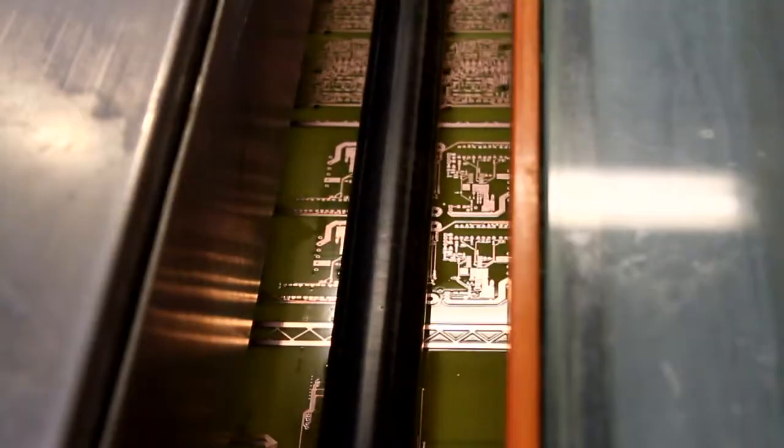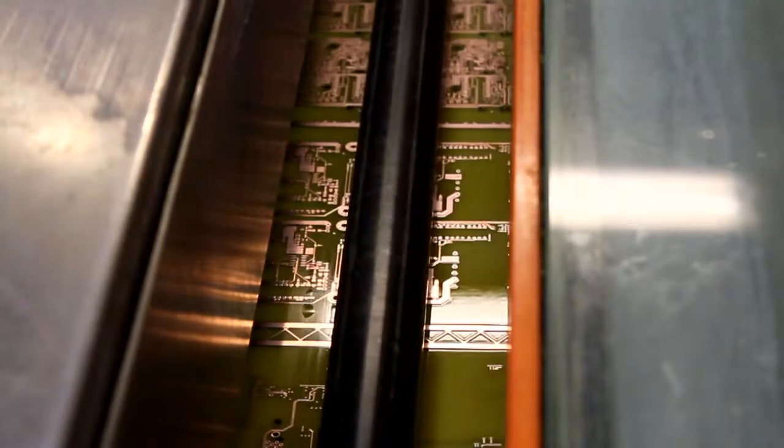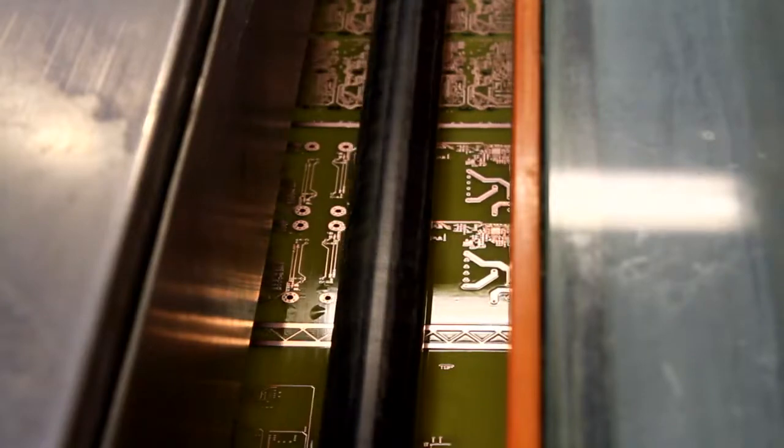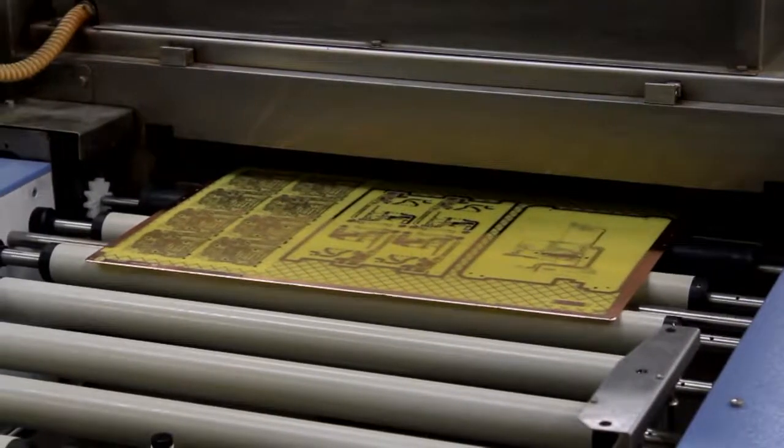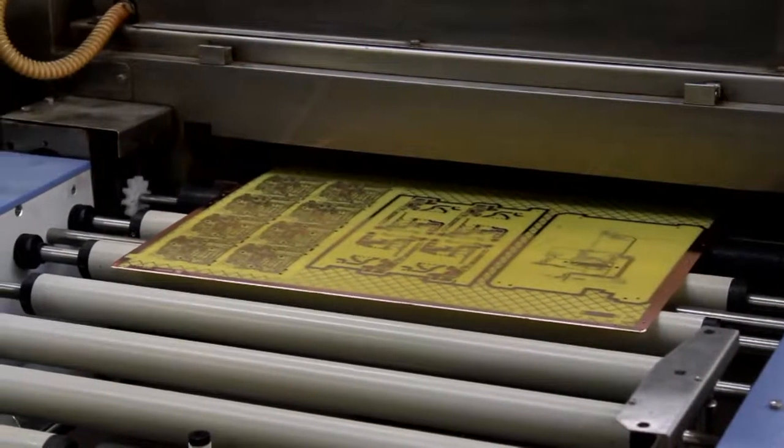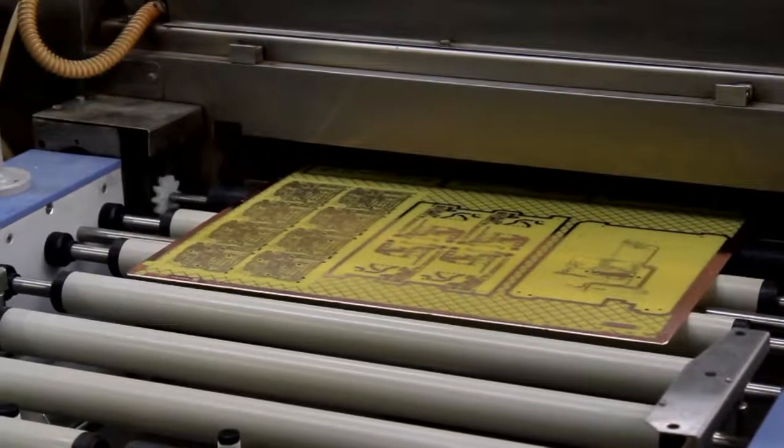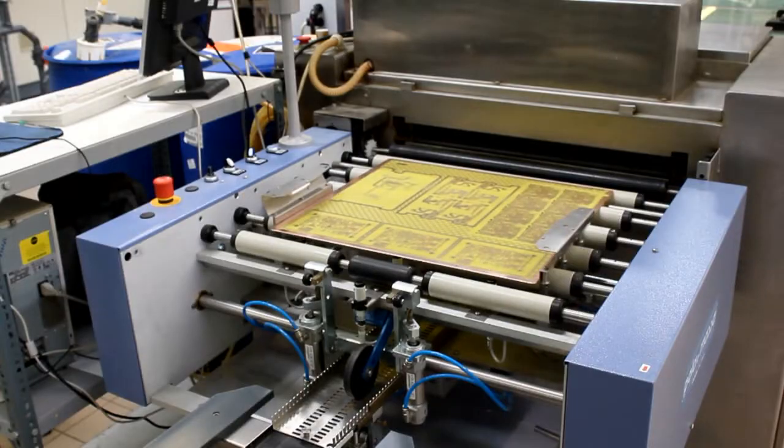Then we remove the unwanted copper using a powerful alkaline solution to etch away the exposed copper. The process is carefully controlled to ensure that as we etch down we don't etch sideways as well. This means that the finished conductor widths are exactly as designed. But designers should be aware that the thicker copper foils need wider spaces between the tracks.